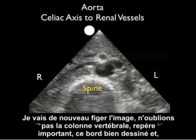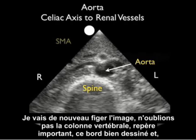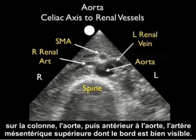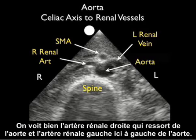Freezing the image, we again note the spine as our very important landmark with its hyperechoic bright rim. On top of the spine we see the aorta, and anterior to the aorta we see the superior mesenteric artery with its bright hyperechoic rim. We can also see the right renal artery coming off the aorta and the left renal vein to the left of the aorta.